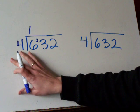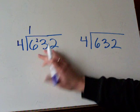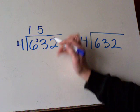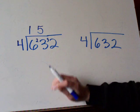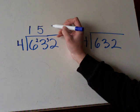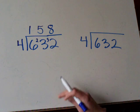So now the next step is 4 goes into 23. 4 goes into 23 five times with a remainder of 3. So we're going to put that remainder here in front of the next digit. Now we have 4 goes into 32. How many times? It goes into there 8 times evenly.